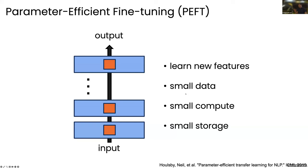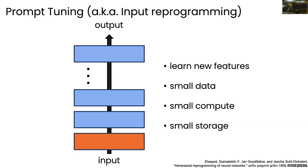That's one approach people started studying in the last five years. But if you go even wider — why do we even fine-tune the original network? Maybe all we need is some kind of input transformation. Maybe all we need might be achievable by just transforming the input for certain tasks. People call this 'input reprogramming,' the idea from a famous 2018 paper, but it can also be viewed as a special case of prompt tuning.